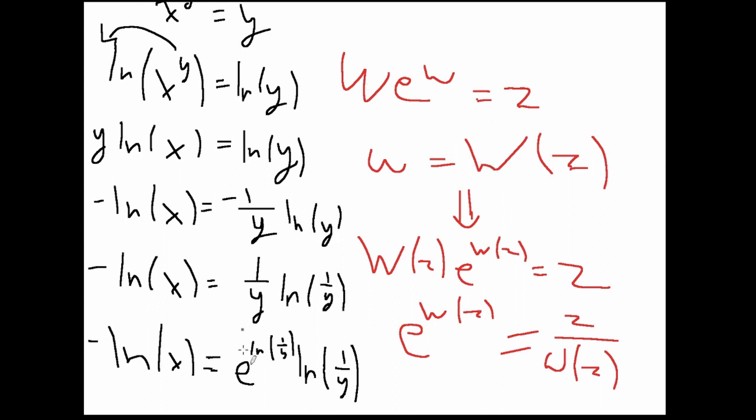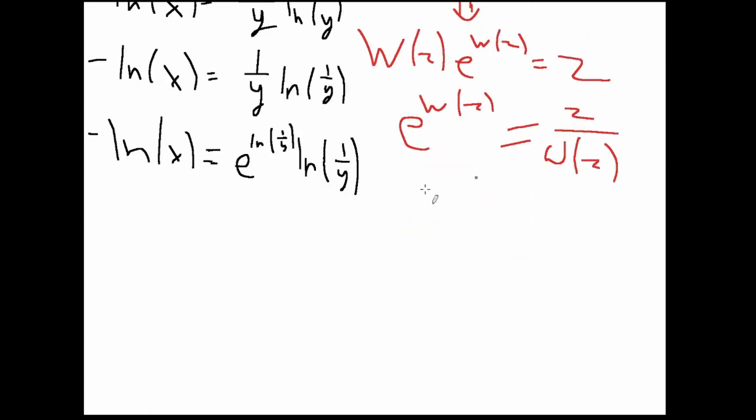So, if you notice, we can simply use that for solving right here in our situation with infinite power tower. This is in the exact form of this first one right up here, w times e to the w equals z. And we can use this definition of the Lambert w function in that, using the function, we can get the Lambert w function of inputting negative ln of x. That equals ln of 1 over y.